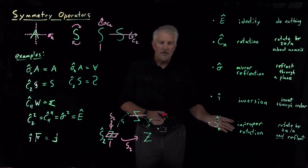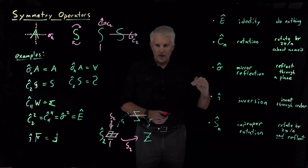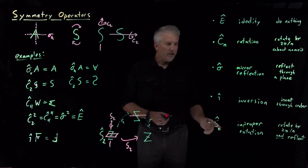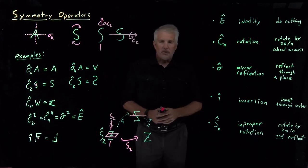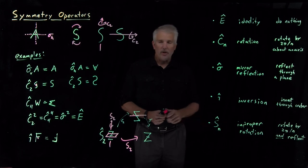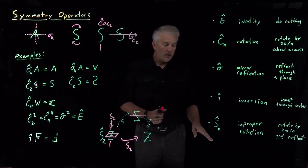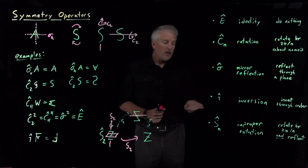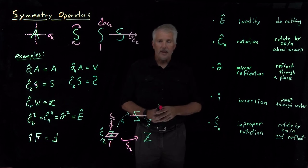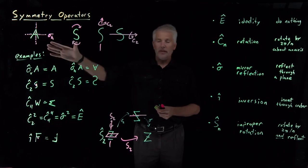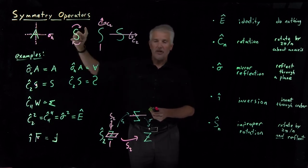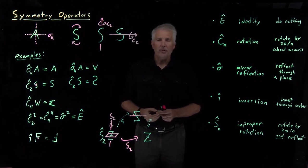That's the main reason we need to talk about improper rotations: there are molecules for which doing a rotation and a reflection together leaves the molecule unchanged, even though there is no corresponding proper C axis or mirror reflection plane. So those are the five important symmetry operations chemists need to know: the identity E, mirror reflection σ̂, proper rotation Cn, inversion î, and improper rotation Sn. The next step will be to recognize whether something is symmetric based on which of these operations leave the object unchanged — which introduces the idea of symmetry elements.